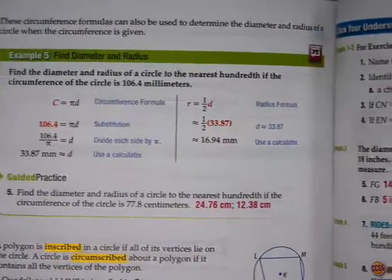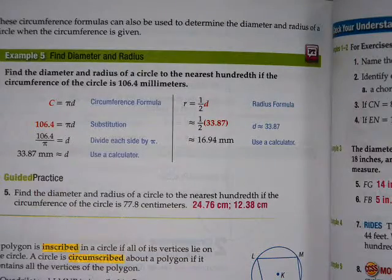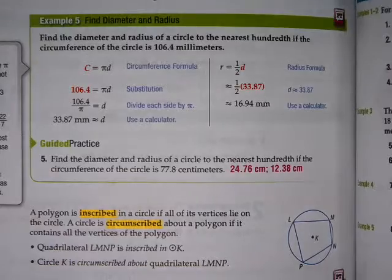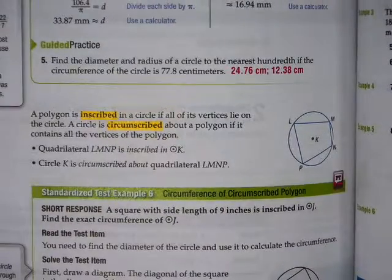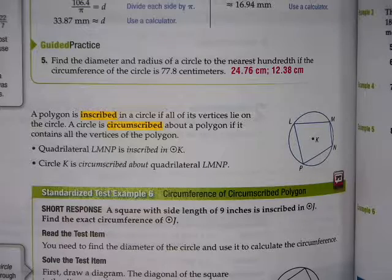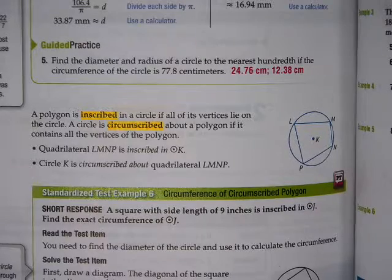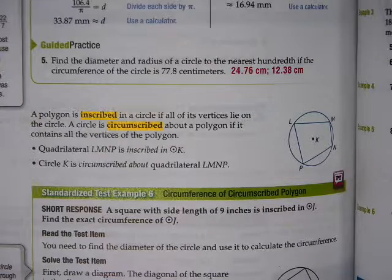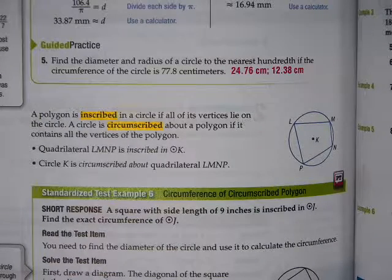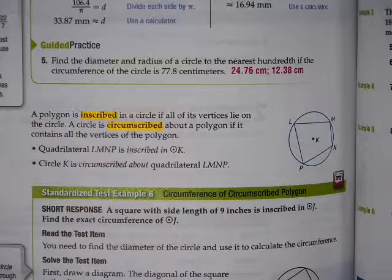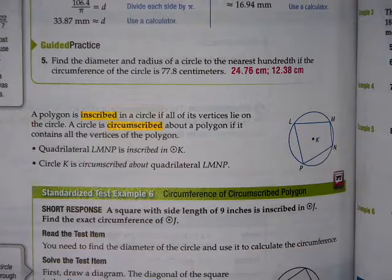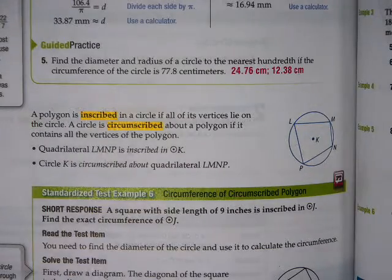But another piece of terminology, inscribed and circumscribed. I said circumscribed. Inscribed, a polygon is inscribed inside the circle. So inscribed means inside, the polygon is inscribed.